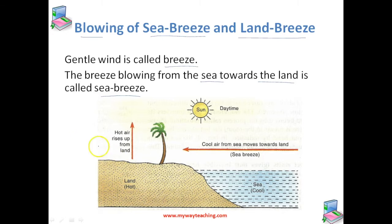At that time only, hot air from the land blows up and cold air from the sea moves towards the land. To receive the cold sea breeze during the day, the windows of houses in coastal areas are made to face the sea.